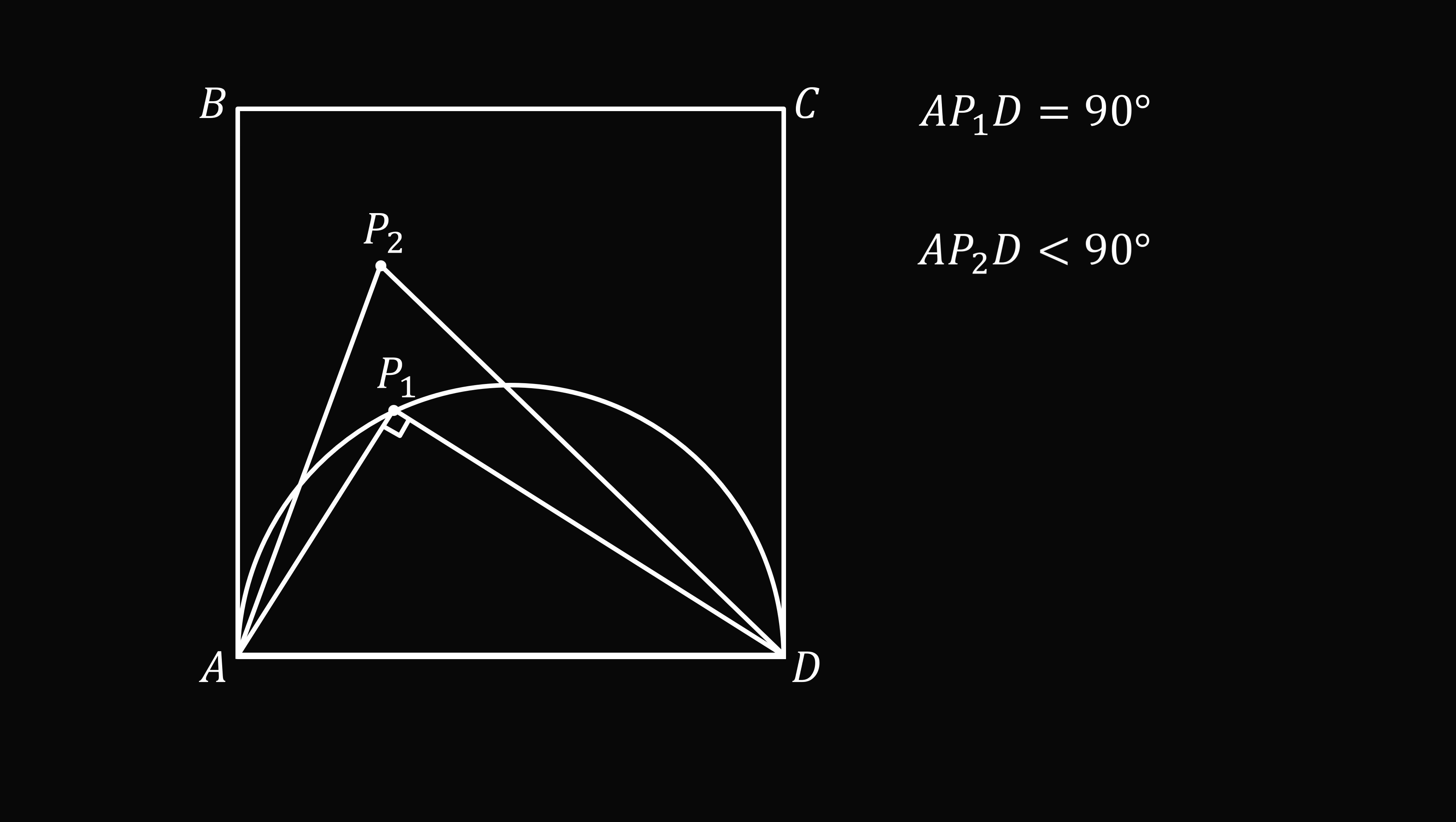So we just have one more case to consider. Let's suppose a point P₃ is in the interior of the semicircle. Now construct this triangle. Now P₃AD and P₃DA are smaller than the corresponding angles P₁AD and P₁DA. So the sum of these two angles will be less than 90 degrees. Since the three angles in a triangle sum to 180 degrees, we can conclude that AP₃D is greater than 90 degrees.